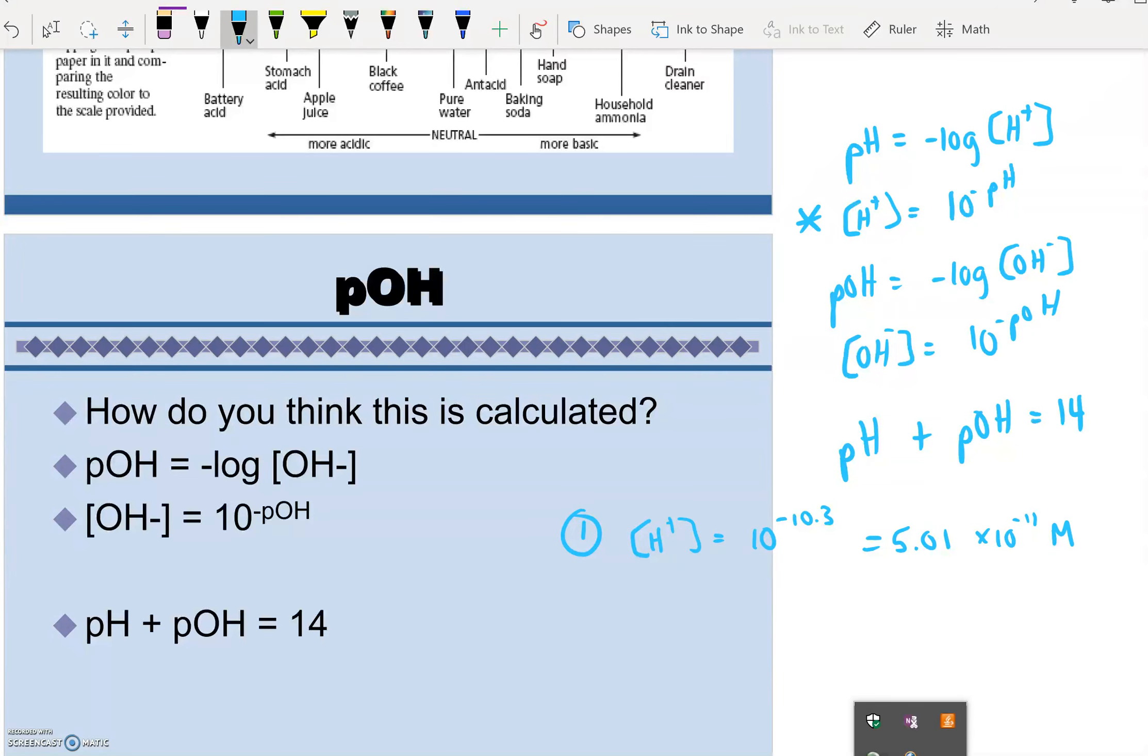Number 2 says, if the hydrogen ion concentration is 2.1 times 10 to the negative 12, what is the pH? Is it acidic, basic, or neutral? So here's the equation we're going to use this time. I'm looking for pH given my concentration. So pH equals negative log, the concentration given to me in the problem, 2.1 times 10 to the negative 12 molar.